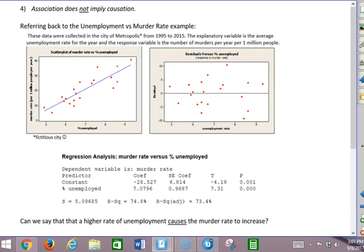Regression wisdom number four says that association does not necessarily imply causation. So referring back to the unemployment versus murder rate example, we notice that as the percent unemployed increases in Metropolis, the murder rate also increases.